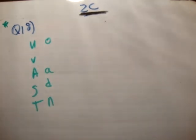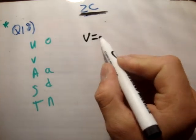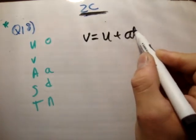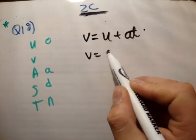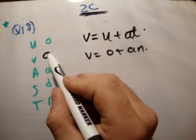Let's say v is equal to u plus at. We're probably sick of using this form at this stage. So, v is equal to 0 plus a times n. So, this is an.